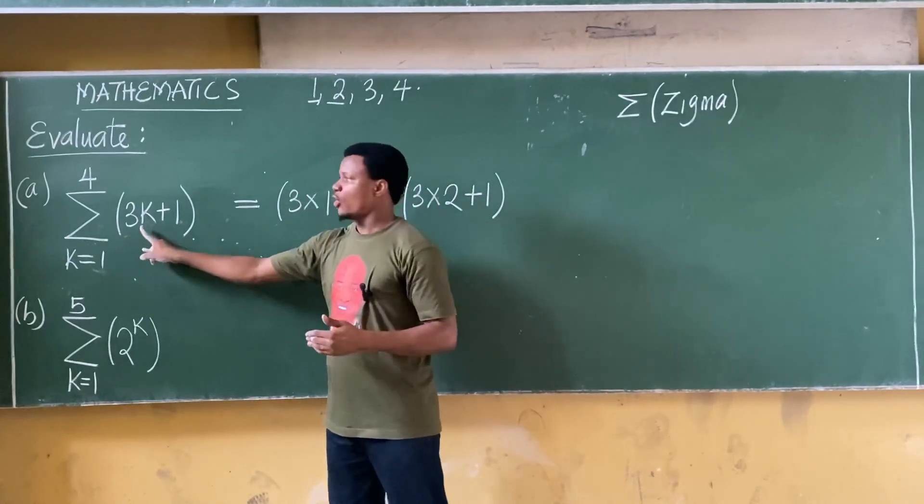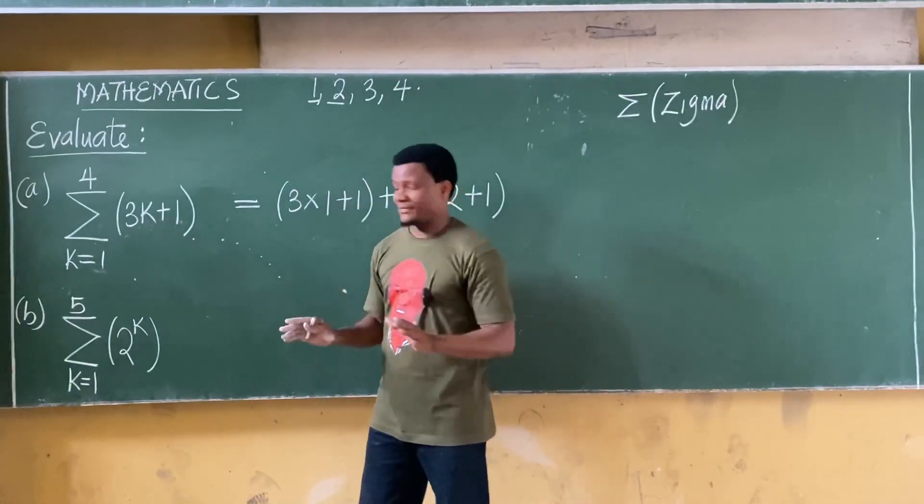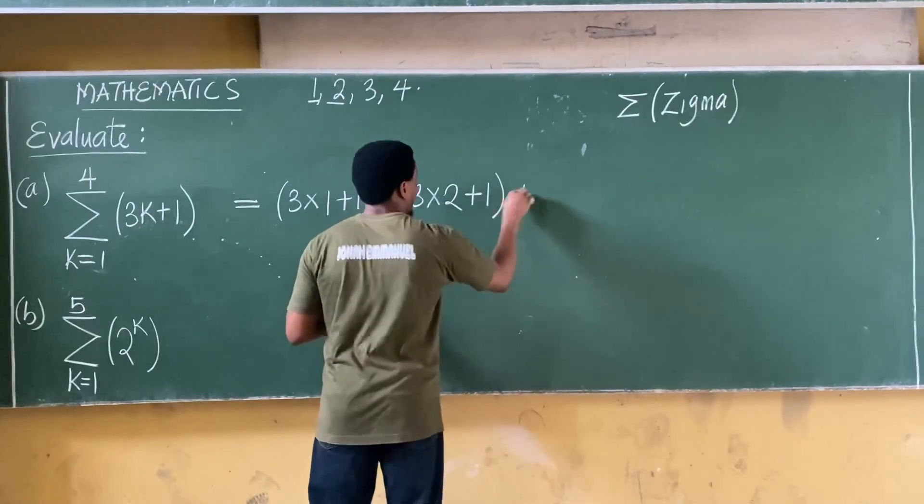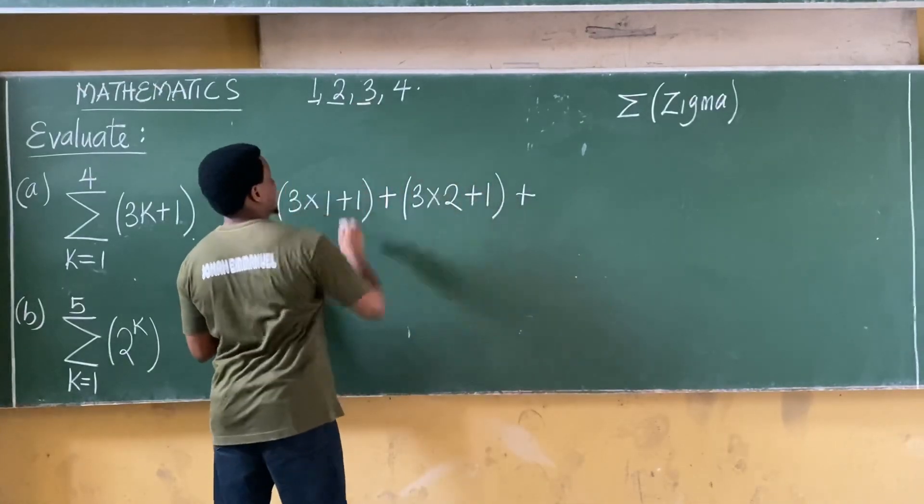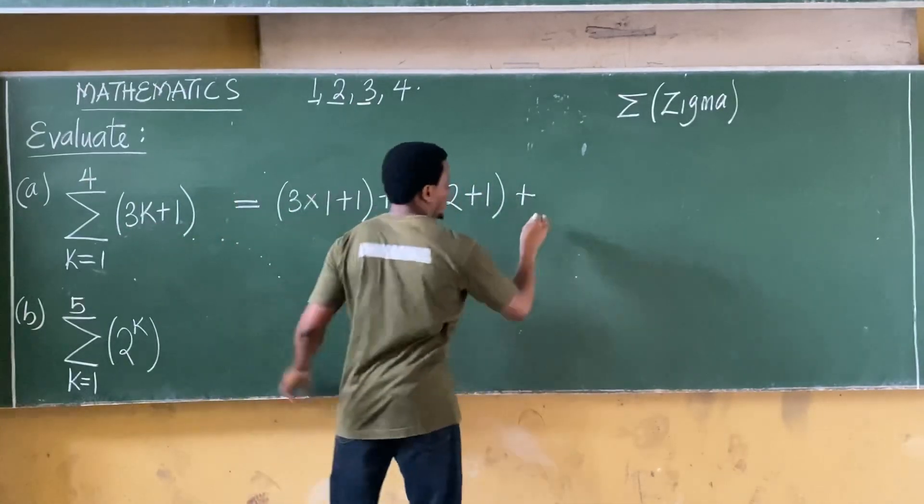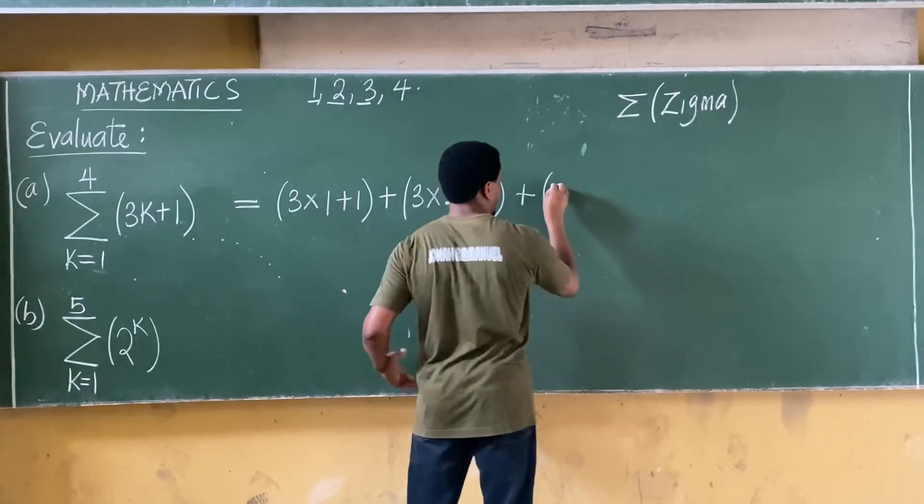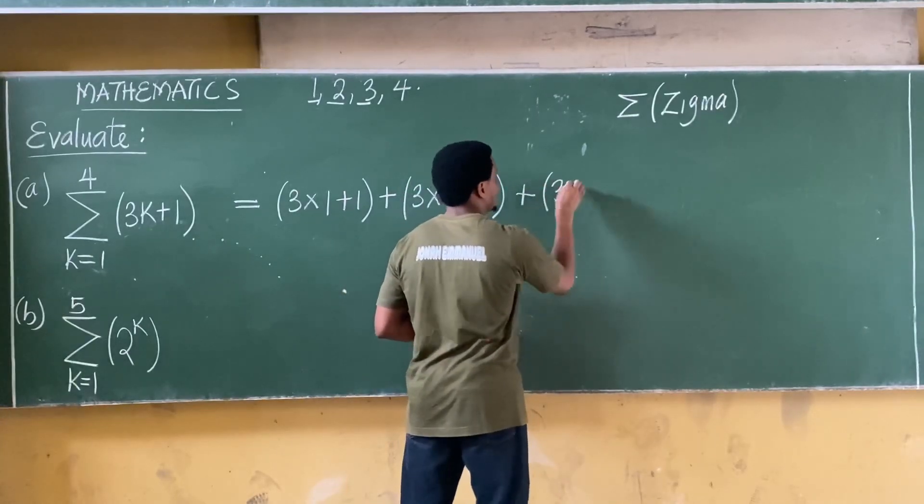In essence the only thing that is changing is just the variable, all other thing remains the same. Plus, I'm done with two, let's now take k as three. 3k becomes three times k, which in this case k is now three, that becomes three times three.